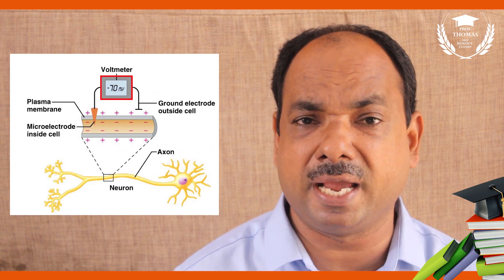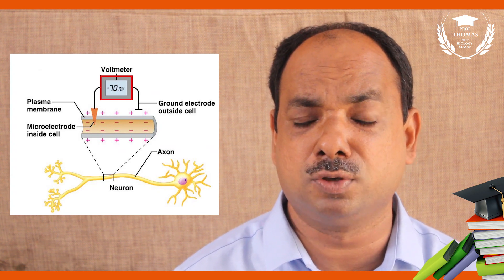Neurons are classified as unipolar, bipolar, pseudo-unipolar, or multipolar. By function, they are classified as afferent, efferent, or interneurons and motor neurons. They can also be categorized as myelinated or non-myelinated, and as adrenergic or cholinergic neurons.